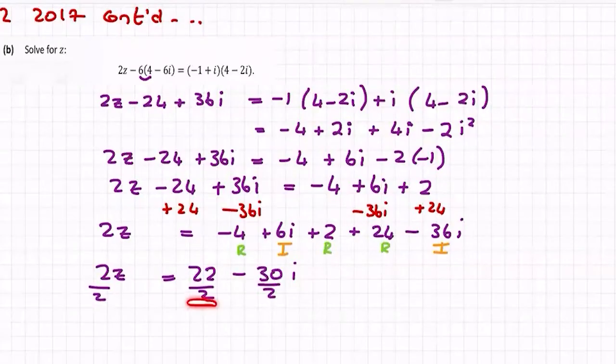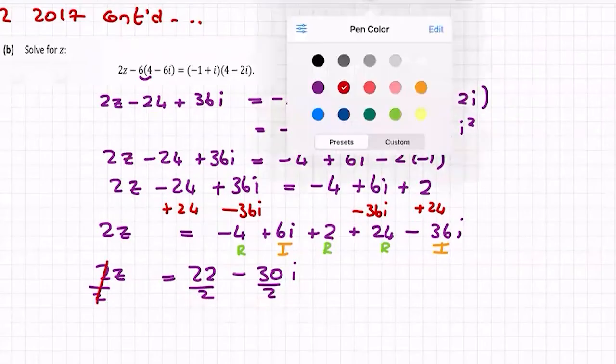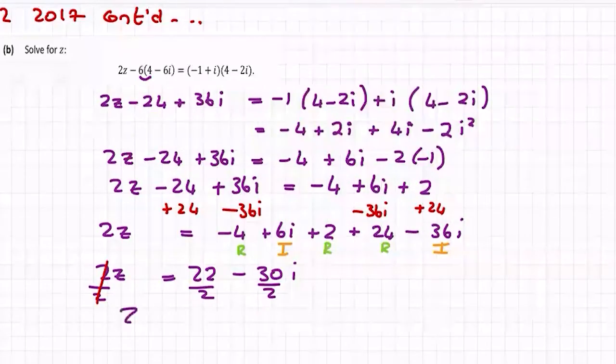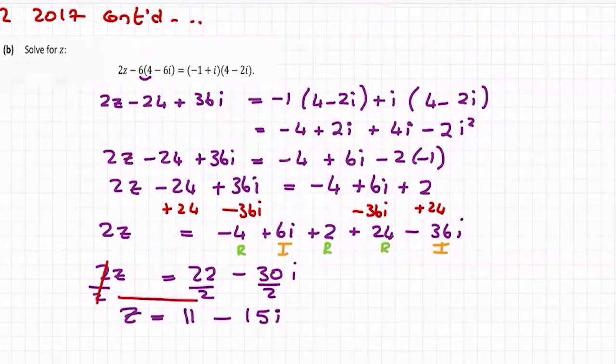I don't want 2z, I want to solve for z, so let's divide across by 2. It's just the same, you just divide each part by 2. So they'll cancel, so you're left then with just z being equal to 22 over 2 is 11, 30 over 2 is 15i. So that's it, solved for z.